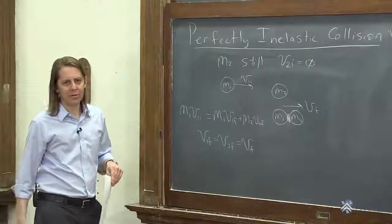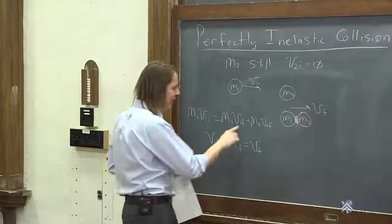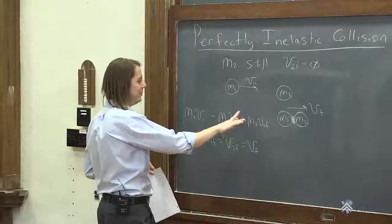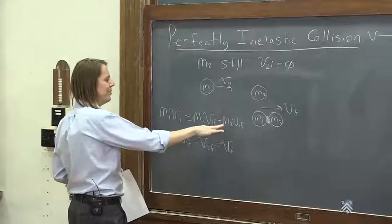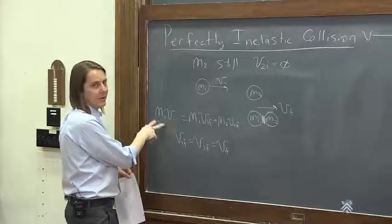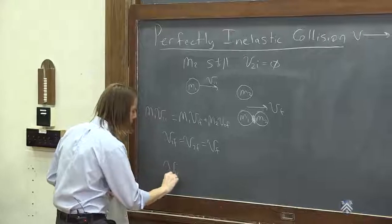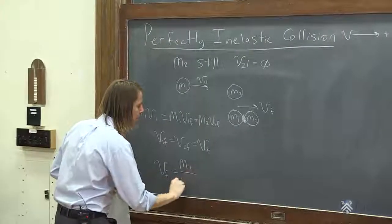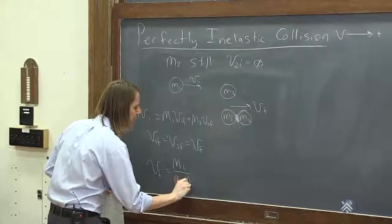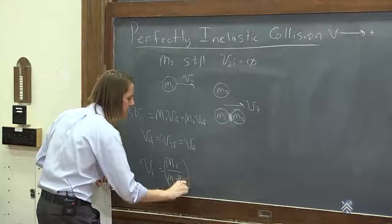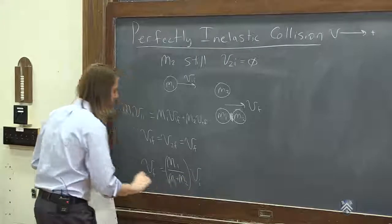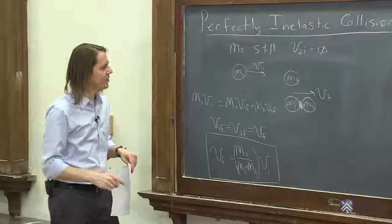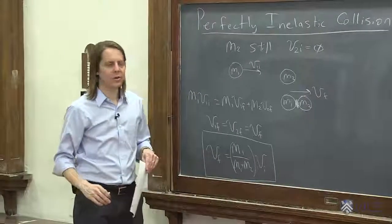So now we have two equations and two unknowns, and it's pretty straightforward to solve it. This is V final, and this is V final. So it's M1 plus M2 times V final. Solve for V final. Just bring the M1 plus M2 under here. So you get V final equals M1 over M1 plus M2, this factor, this ratio, V initial. So that is the perfectly inelastic collision where M2 starts out at rest.